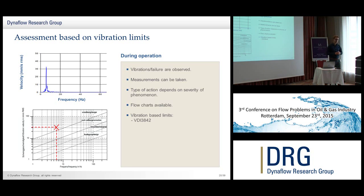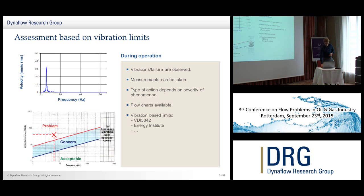This is an example of vibration-based limits — the VDI 3842. The Fourier transform of your vibration measurements shows peaks present in the vibration, and you can estimate if this is bad or not using these guidelines. You also have one by the Energy Institute and some literature available on this. However, these are pretty conservative since you haven't included any information yet about the geometry, what types of welds you're using, etc. So this is just the first preliminary step to have some estimate about how bad the vibrations are.